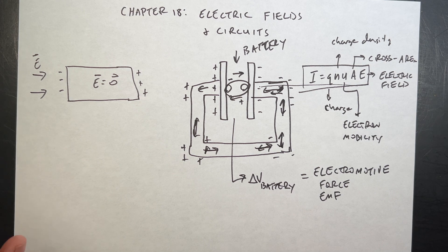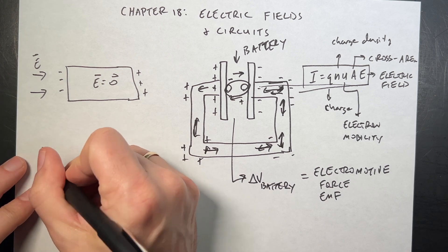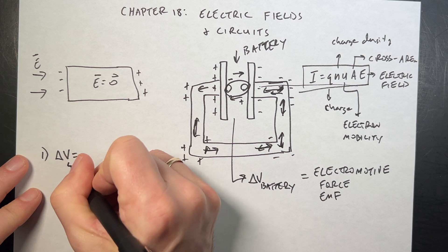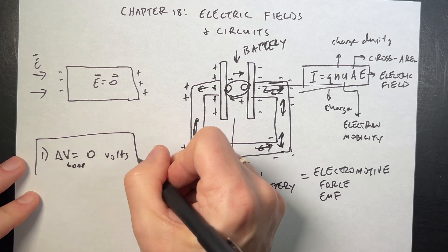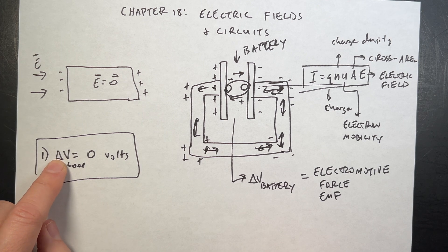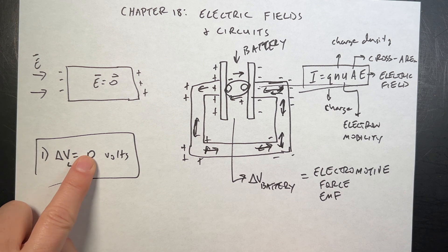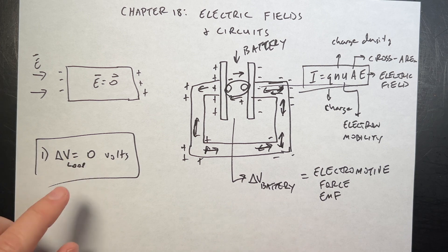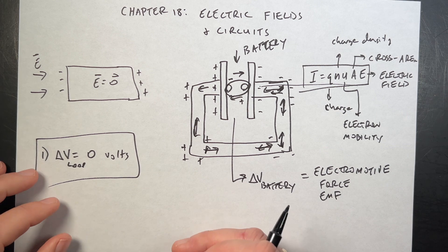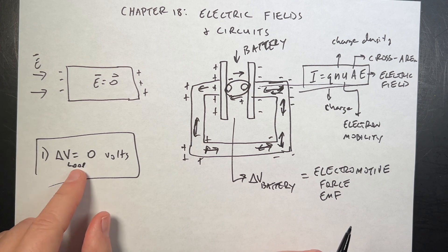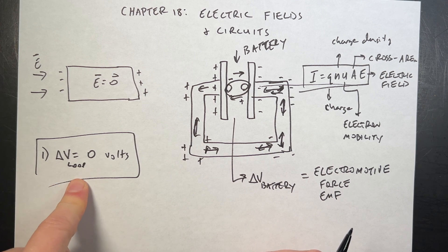Let me go ahead and tell you the two main things in this chapter. Number one: delta V loop equals zero volts. This says that if I look at the change of potential around any loop, I'm going to get zero. This is because the electric field is a conservative force. If you go back to potential energy, the work done by a conservative force along any path is the same, so the work done around a loop has to be zero — this is really just conservation of energy.